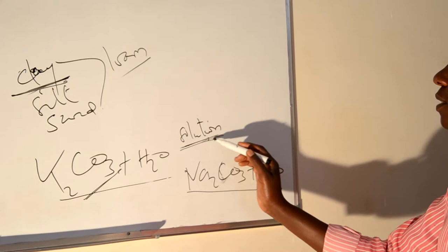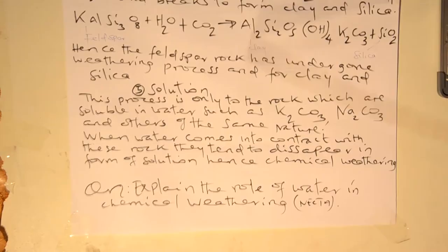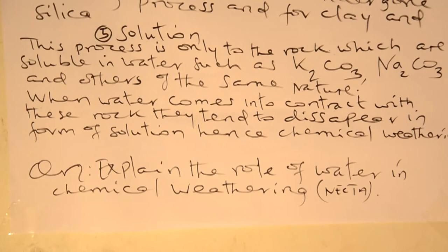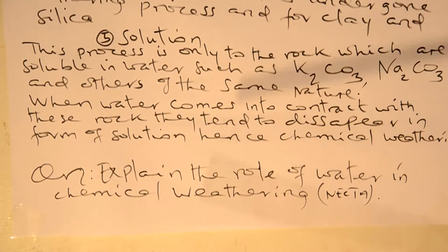Question: Explain the role of water in chemical weathering. Therefore, you have to refer to the processes of chemical weathering — for instance, carbonation, oxidation, hydration, hydrolysis, and solution. You have to base on these because water is playing the big role. For instance, in solution, potassium carbonate and sodium carbonate which react with water can cause solution to take place.